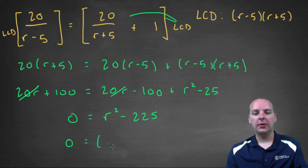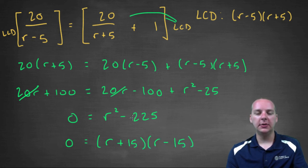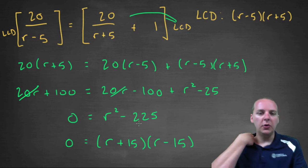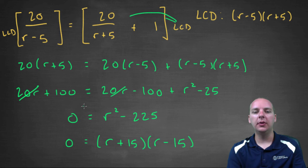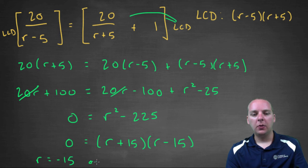This will factor as r plus 15 times r minus 15, that's a difference of squares there. You could also add 225 to the left, and then take the square root, if you'd rather. But, but here we see r equals either negative 15, or r equals positive 15.